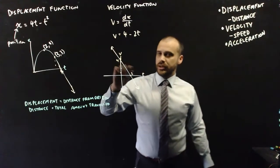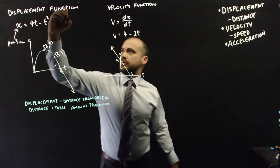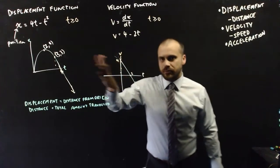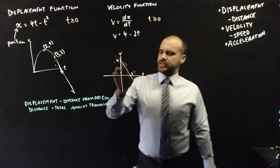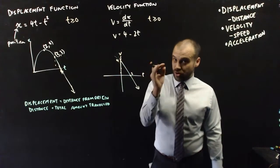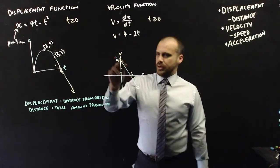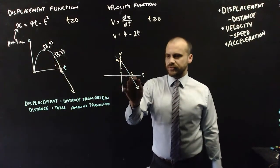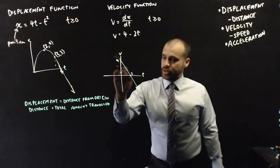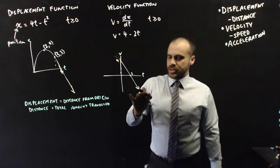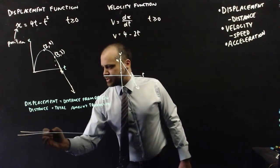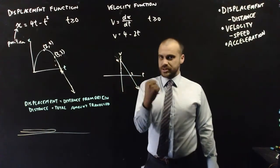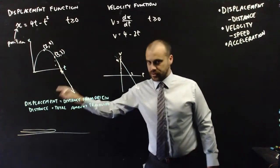This is what our velocity function looks like. We assume time is greater than or equal to 0, which means this graph doesn't exist backwards in time. At time 0, the velocity was at its highest — it was travelling at 4 metres per second. As time goes on, it gets to the point where velocity is 0, which lines up with the change of direction. After that, the velocity is negative, meaning it's moving in the other direction to how it started — positive and negative velocities.